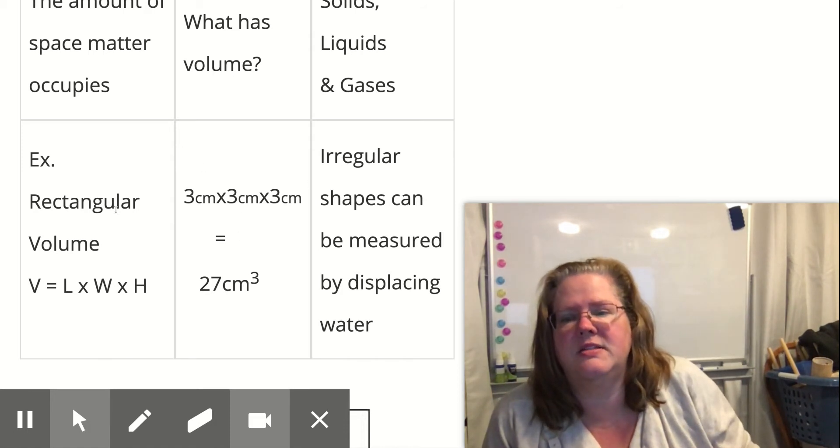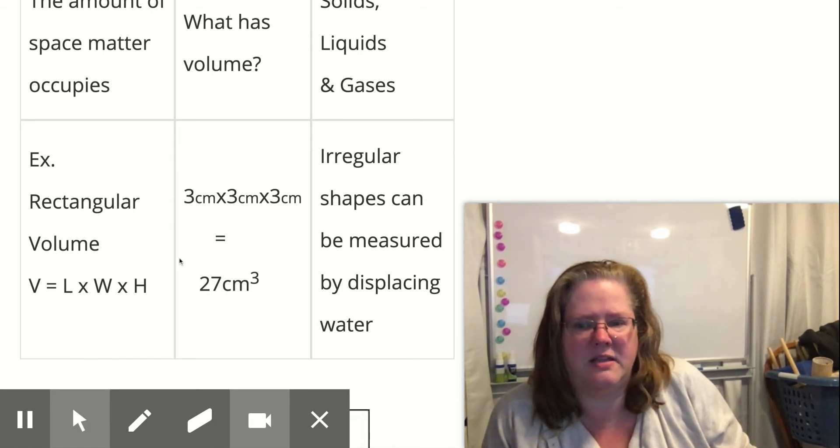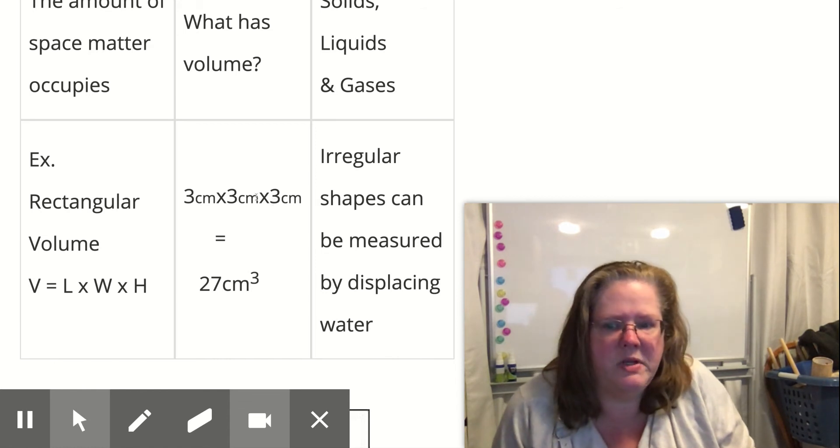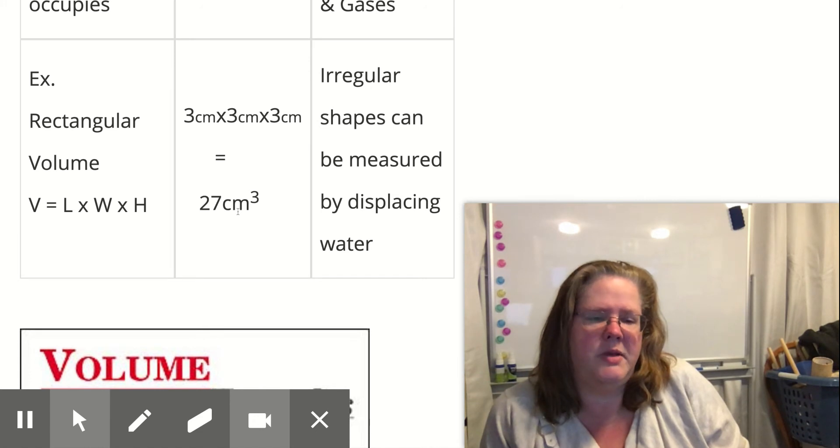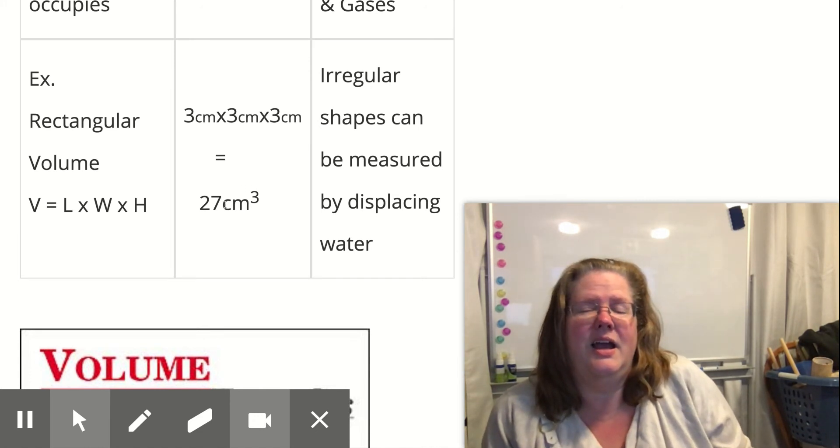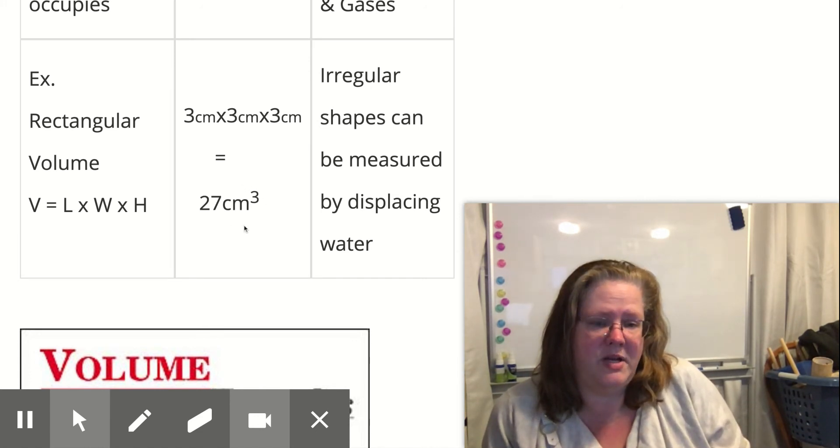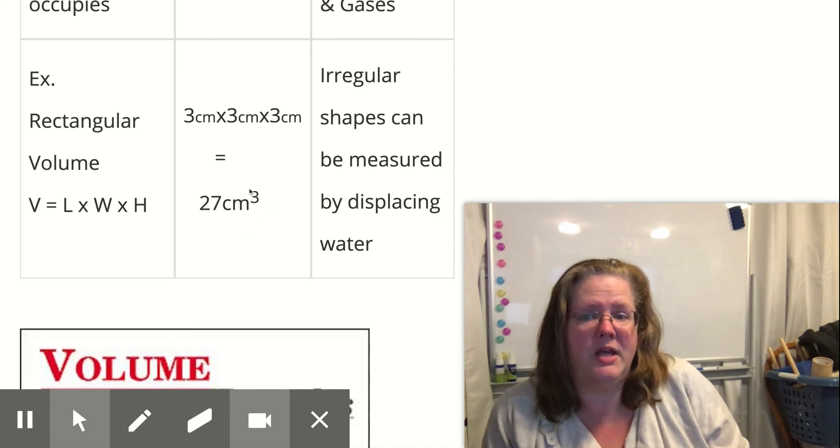I can use formulas if I've got like a rectangular object, length times width times height, 3 × 3 × 3 is 27 cubic centimeters. But it is important to remember that a centimeter is a length unit. A square centimeter is an area. And remember, a cubic centimeter is a volume.